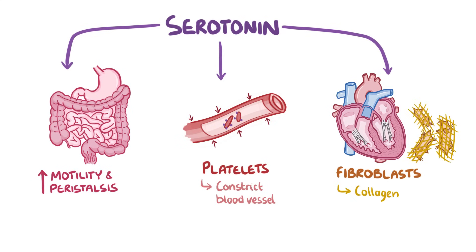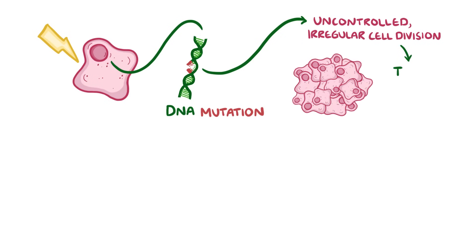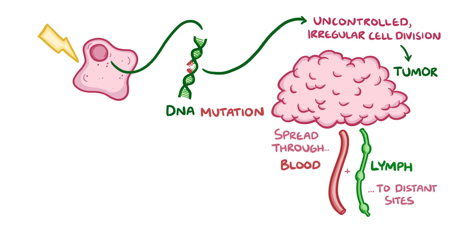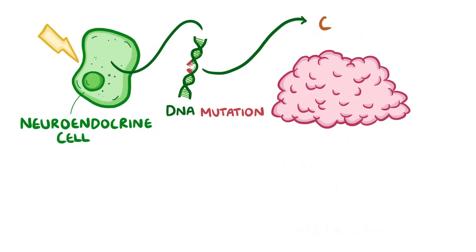So where does the tumour side of things come into it? Well, a cell can become cancerous when DNA mutations cause abnormal cellular functions, like uncontrolled, unregulated cellular divisions, which forms a tumour. The limitless replication means that the developing tumour can invade nearby tissue and spread through the blood and the lymph to distant sites in the body — this is called metastasis. If a neuroendocrine cell mutates and transforms into a cancerous cell, then that cell can continue dividing until it becomes a little mass, and this is a carcinoid tumour.